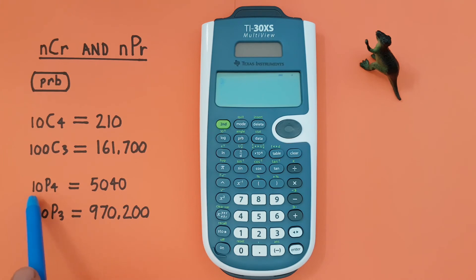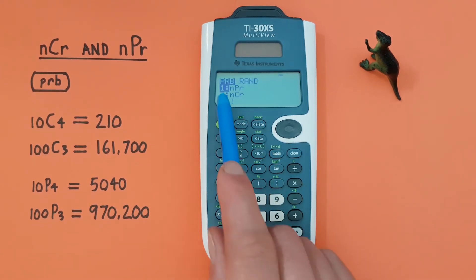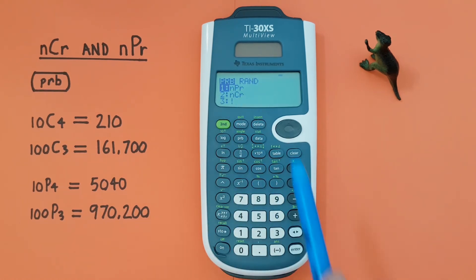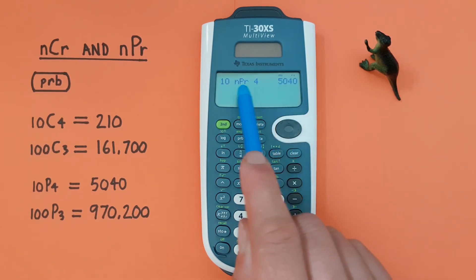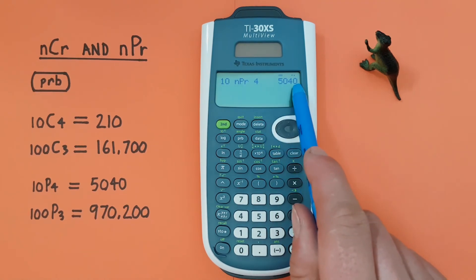If we wanted to do 10 choose 4 permutations, again we would start with the 10, probability key, and we see nPr, or permutations, is the first option here. So we can just press enter, then enter our 4, and see that we get 10 choose 4 permutations is 5040.